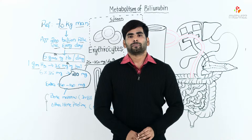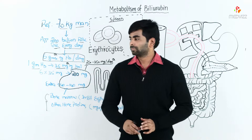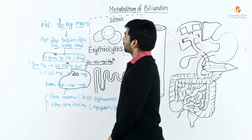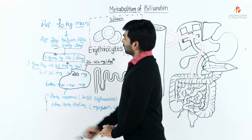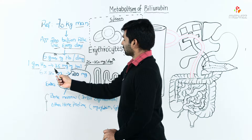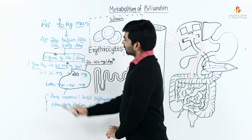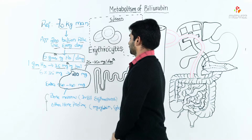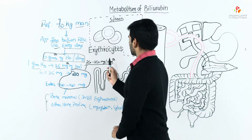Today's topic is the metabolism of bilirubin and how it is produced from different systems. In an average 70 kg man, approximately 200 billion RBCs die every day, producing 6 grams of hemoglobin per day. One gram of hemoglobin produces 35 milligrams of bilirubin, so 6 grams of hemoglobin produces 210 milligrams of bilirubin. The normal production of bilirubin is 250 to 350 milligrams per day.